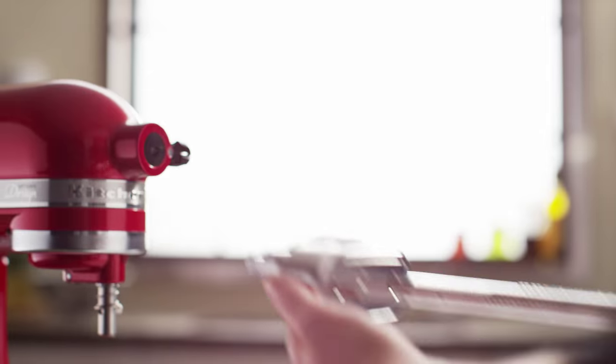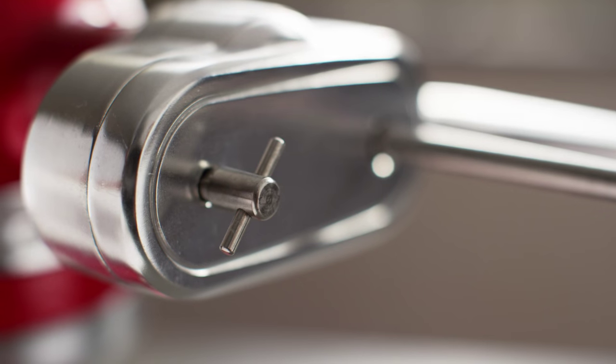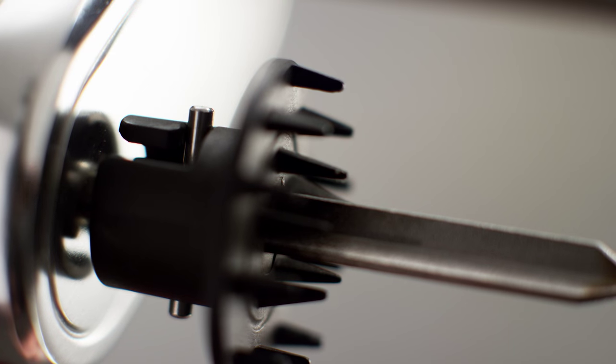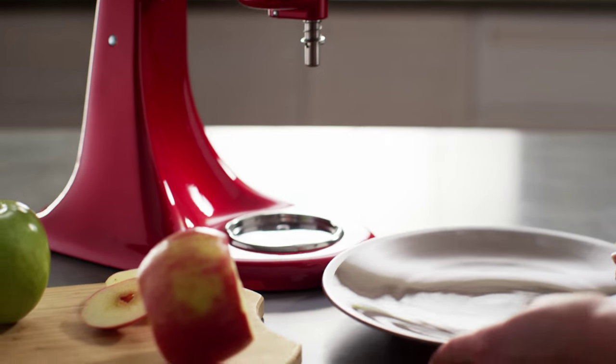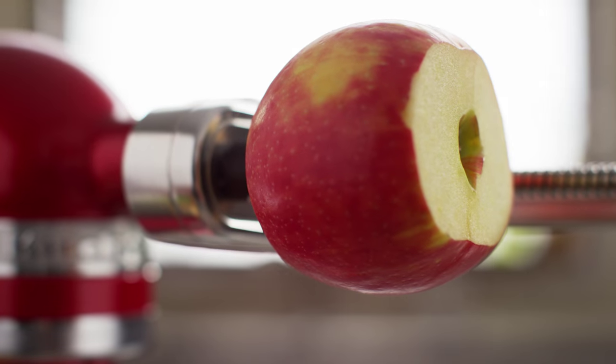Insert the attachment into the hub of your KitchenAid stand mixer, secure, and place the fruit and vegetable skewer onto the mount. Turn it counter-clockwise and click into place. Place a bowl or plate under the spiralizer attachment and secure the food to the fruit and vegetable skewer, pressing firmly into the skewer.